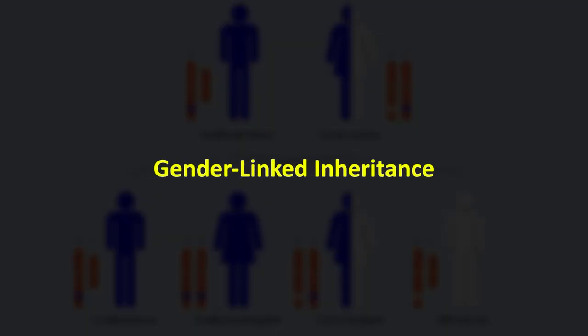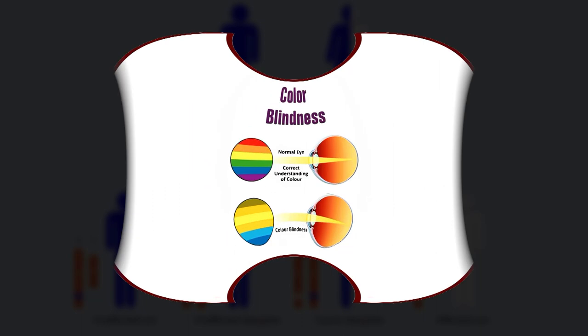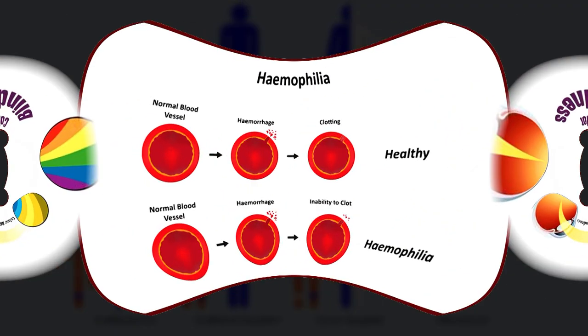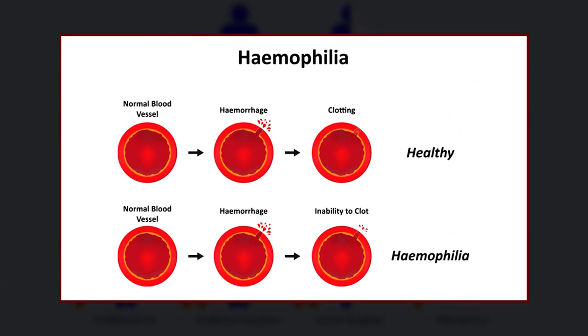Let's now discuss gender-linked inheritance. In this type of non-Mendelian inheritance, we see particular traits or characters in an individual that are related to gender. Disorders like colorblindness and hemophilia are genetic and gender-related disorders.